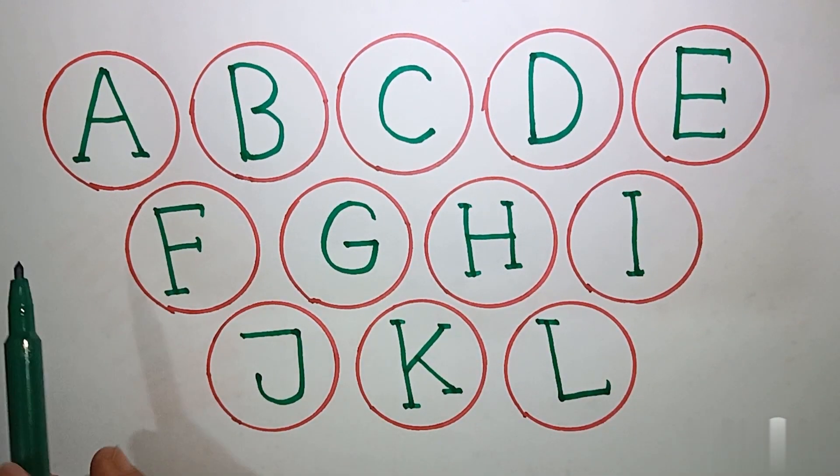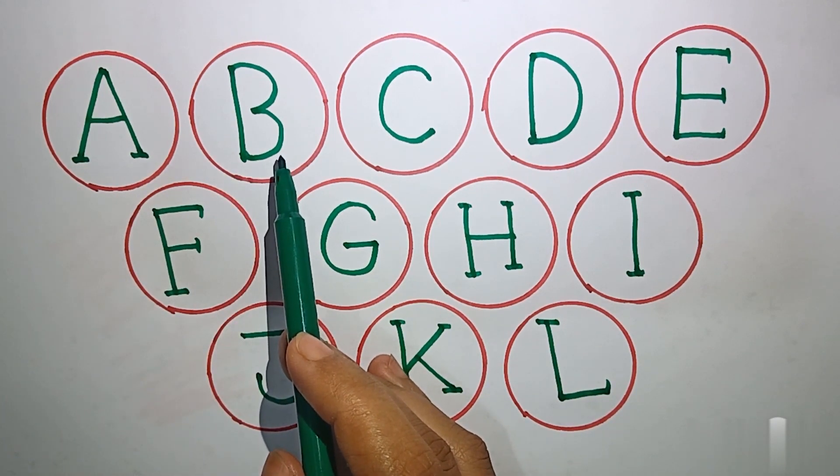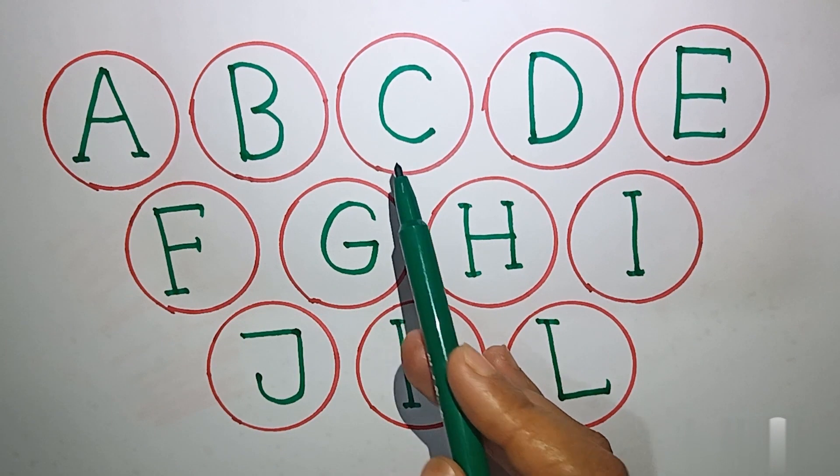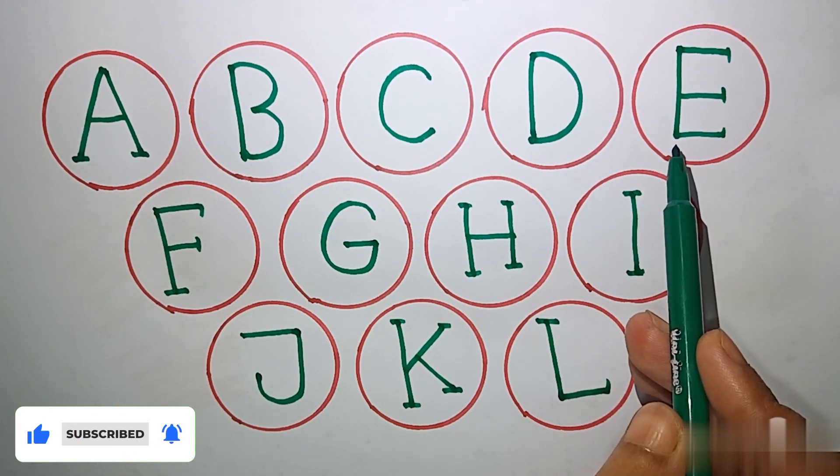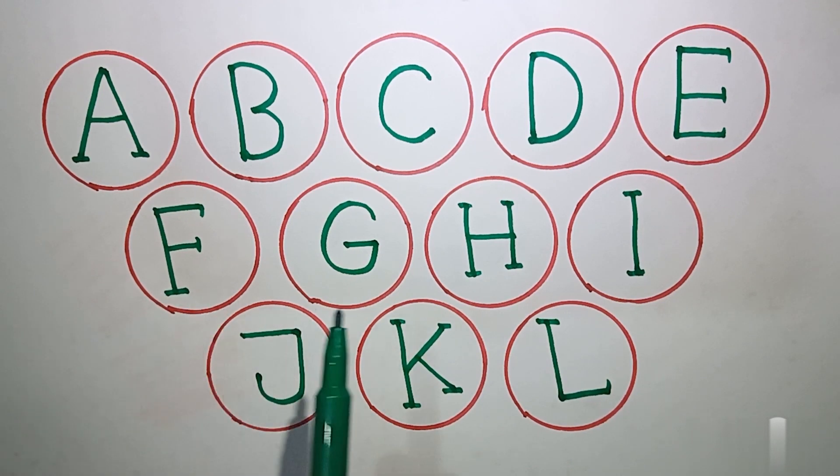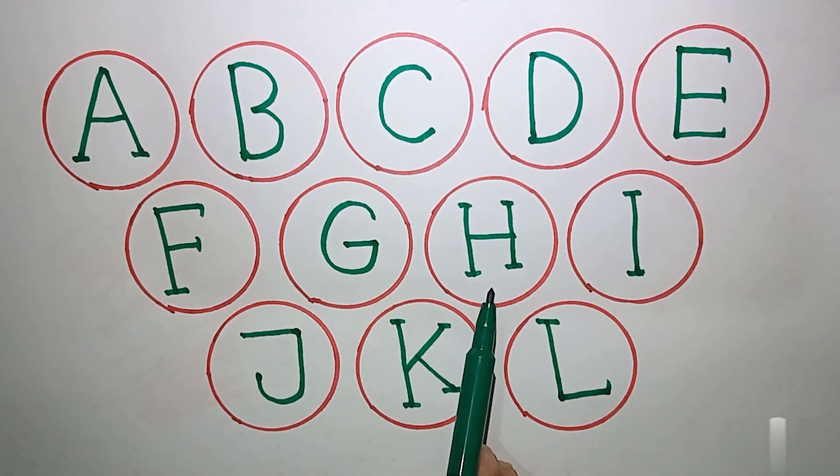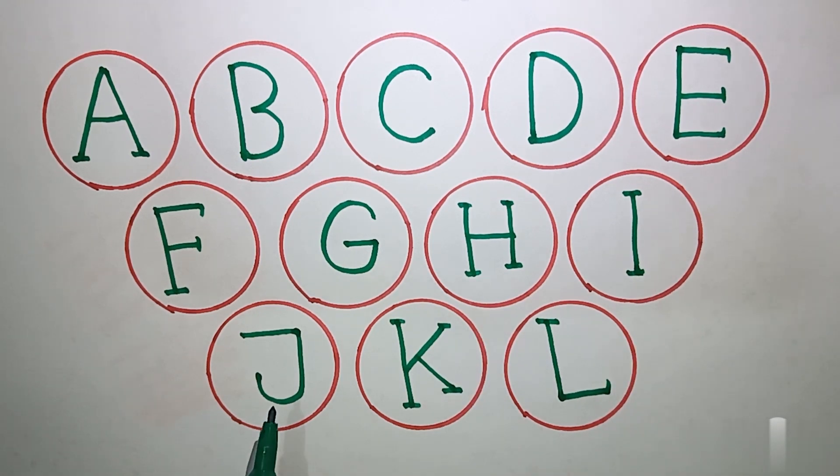A for Apple, B for Ball, C for Cat, D for Dog, E for Elephant, F for Fish, G for Goat, H for Hen, I for Ice Cream, J for Juice, K... L for Lion.